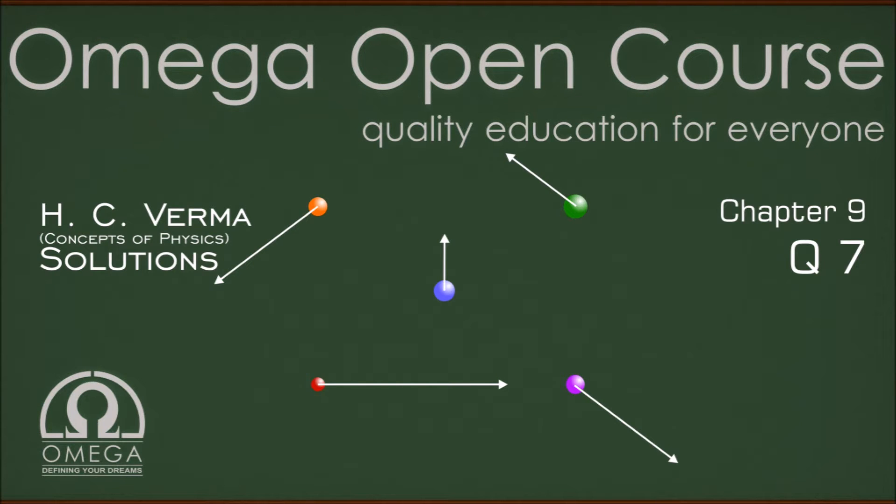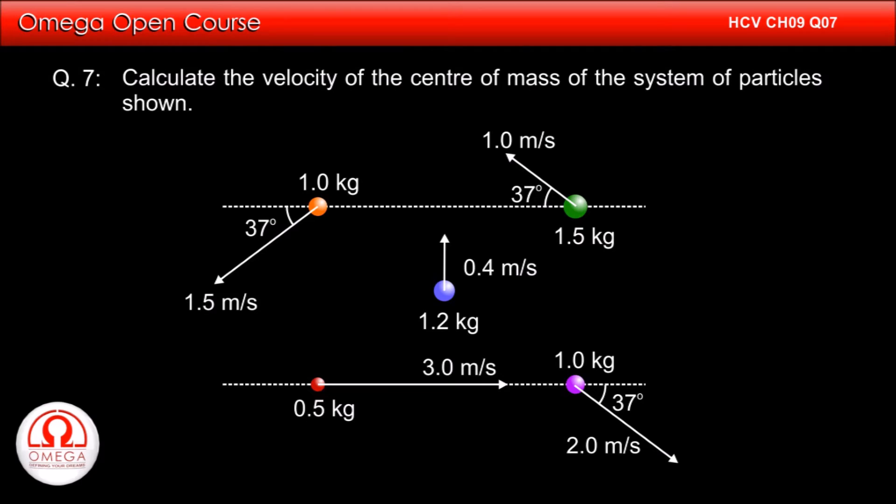HCV Chapter 9, Question No. 7. Calculate the velocity of the center of mass of the system of particles shown.